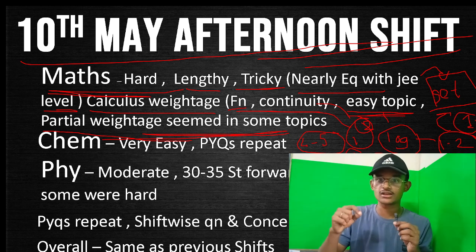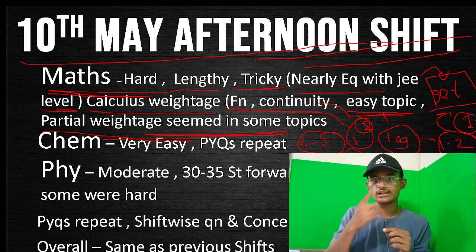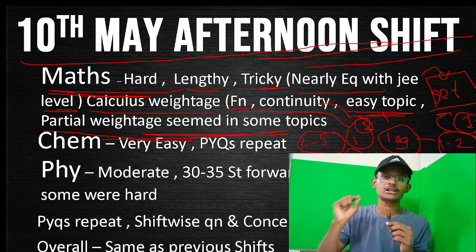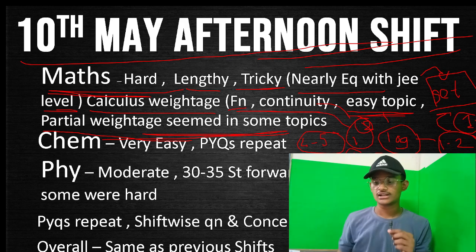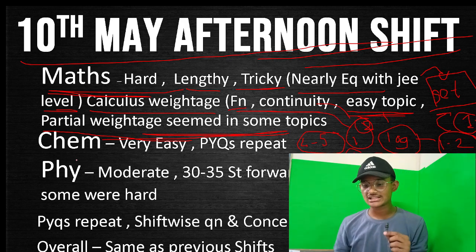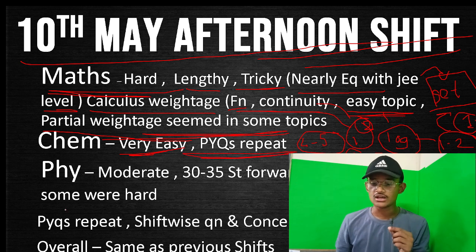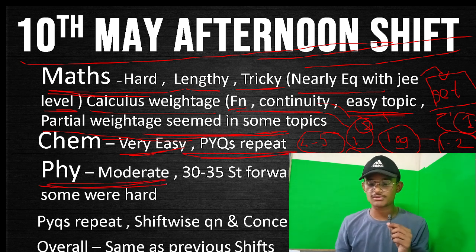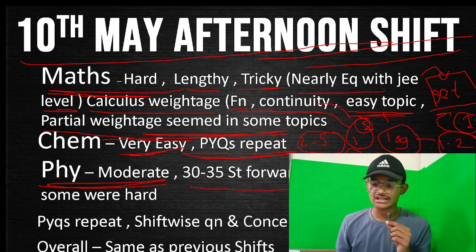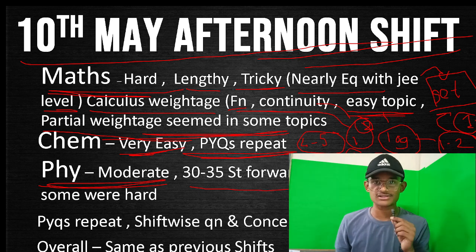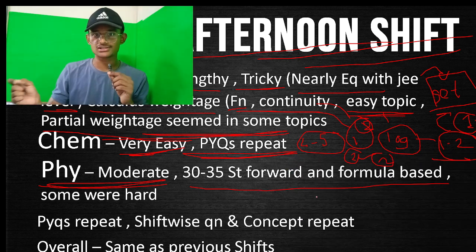Chemistry was as usual very easy — PYQs were quite repeated. Math and physics were also similar: physics was moderate level, with questions that were directly straightforward — just put in the formula and get the answer.